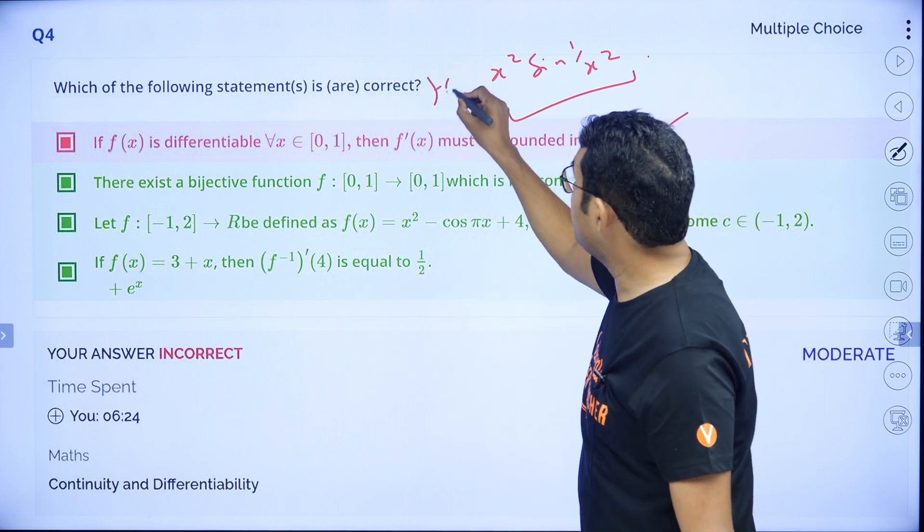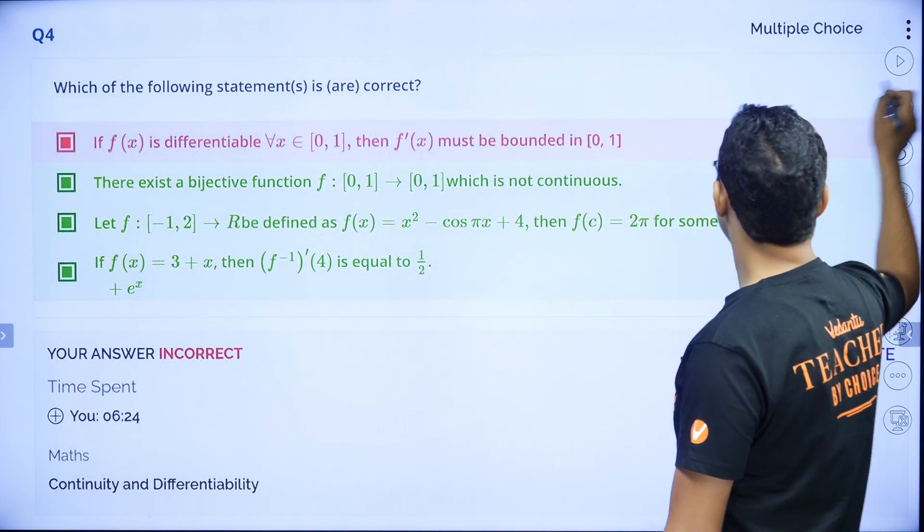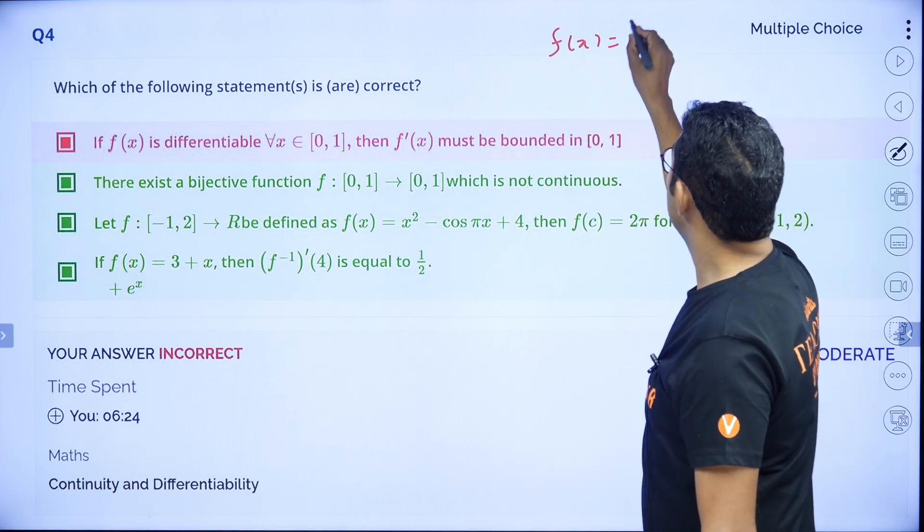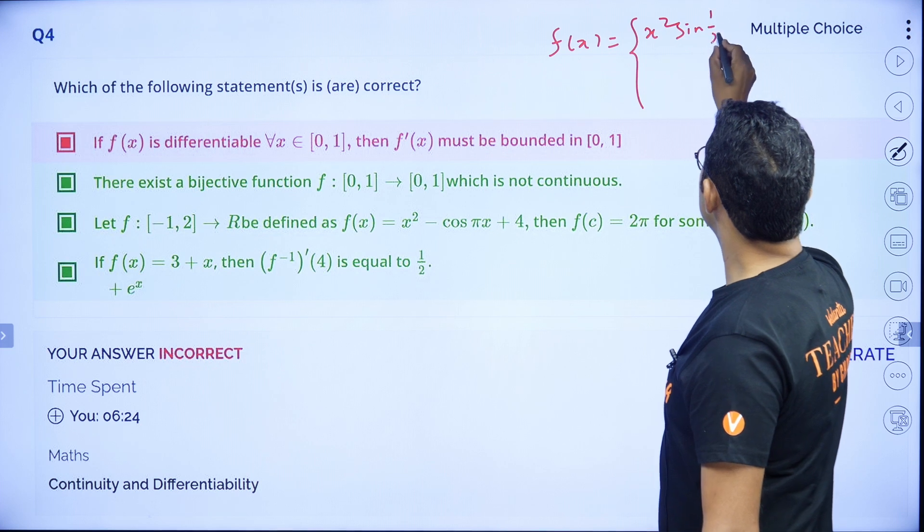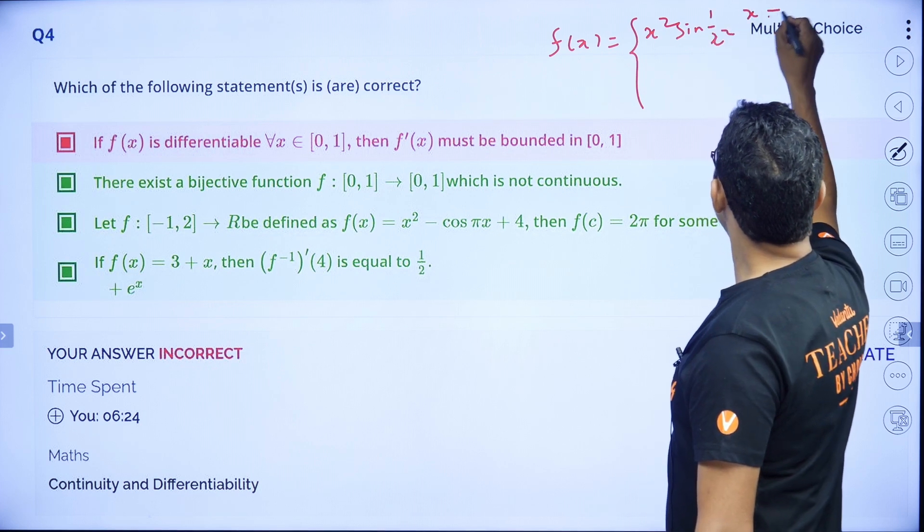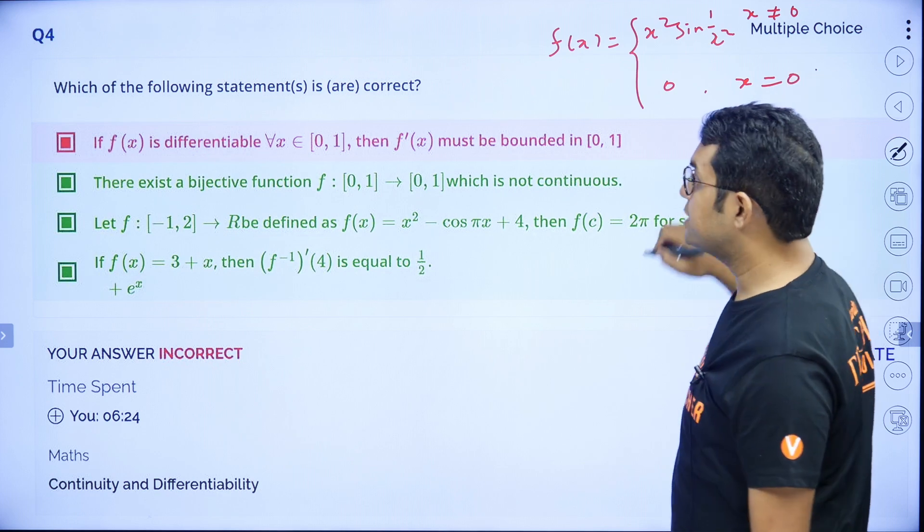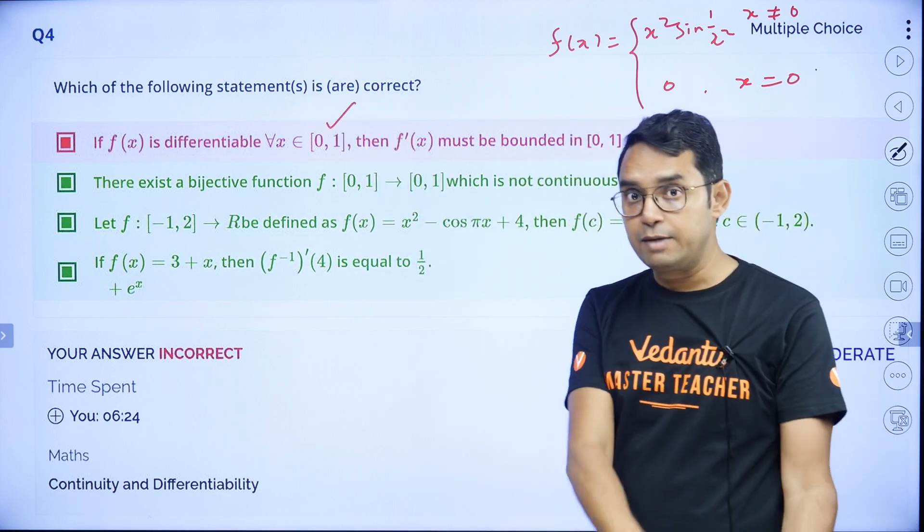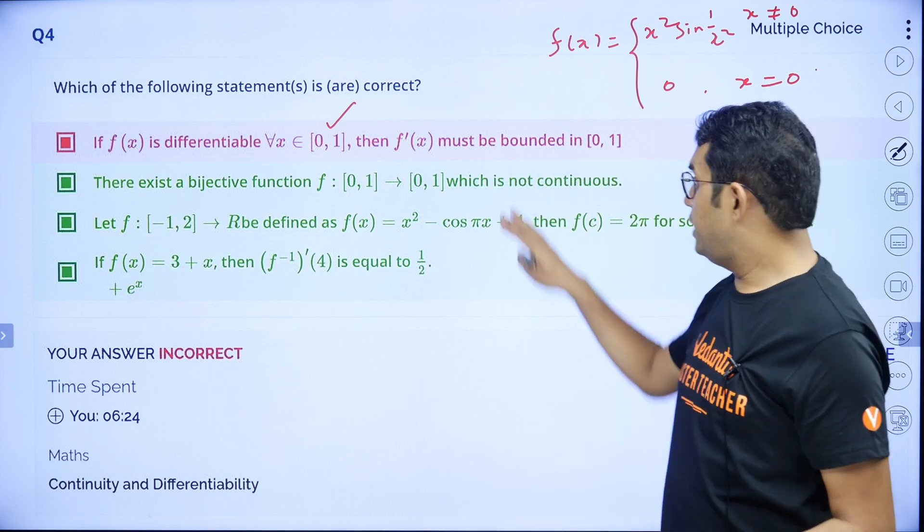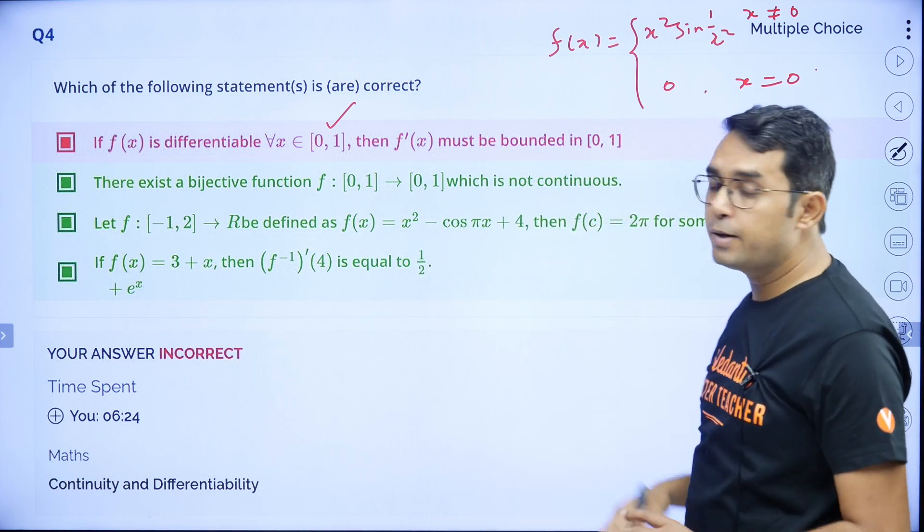Try to do it yourself and see why the function is differentiable on [0, 1]. The function is f(x) = x² sin(1/x²) for x ≠ 0 and f(0) = 0. For this example, please see why the function is differentiable on the closed interval [0, 1] but still its derivative is not bounded. The option says f' must be bounded, but it is not. You can check this with this example.